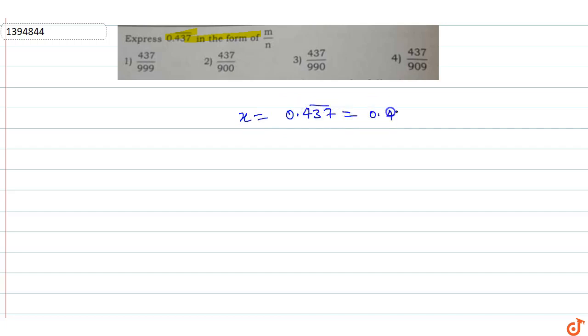This is 0.437437... where the digits repeat. To solve this, multiply both sides by 1000, so 1000x equals 437 point...